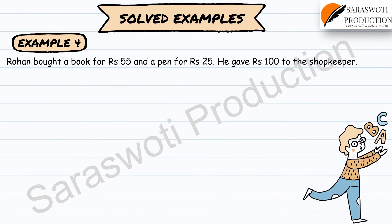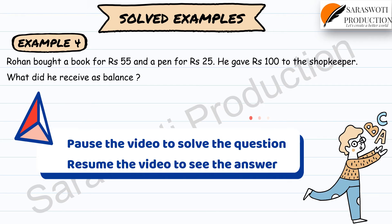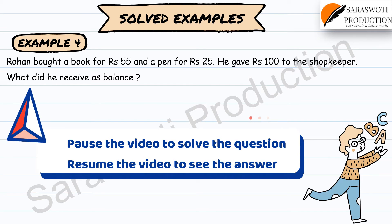Example 4: Rohan bought a book for rupees 55 and a pen for rupees 25. He gave rupees 100 to the shopkeeper. What did he receive as balance? Solve this question yourself — pause the video and then resume to see the answer.